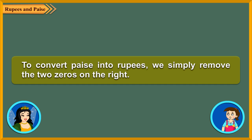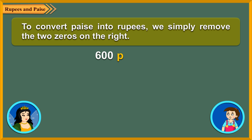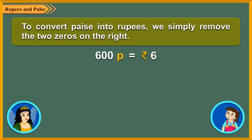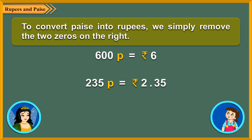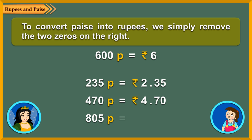To convert Paise into Rupees, we simply remove the two zeros on the right. For example, 600 Paise will become 6 Rupees. What to do when Paise do not have two zeros on the right? In that case, we put a dot after the second digit from the right. Consider 235 Paise — here we do not have zeros on the right, so we put a dot between 2 and 3, that is, two digits from right. Similarly, 470 Paise can be written as 4.70 Rupees and 805 Paise can be written as 8.05 Rupees.